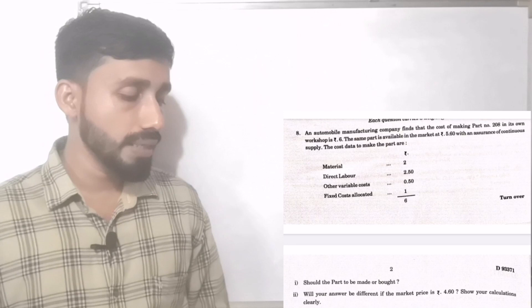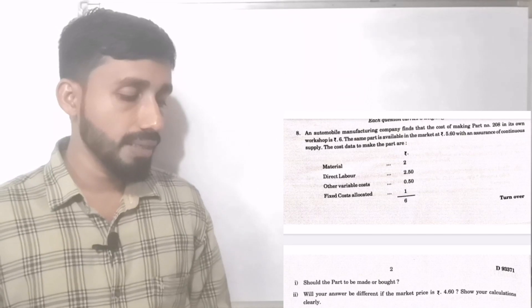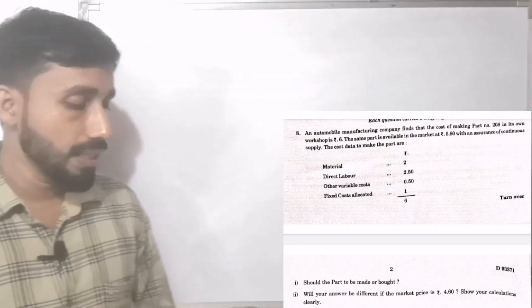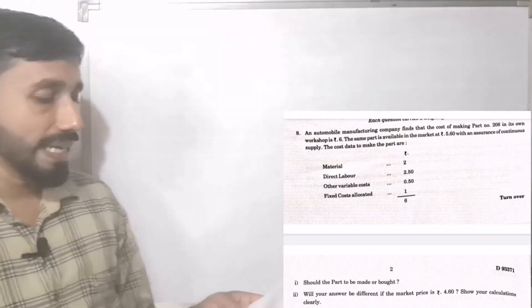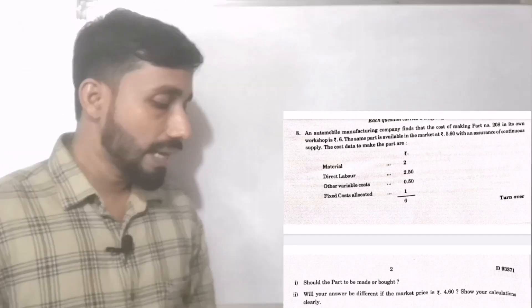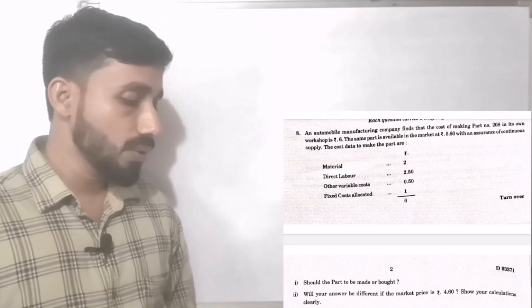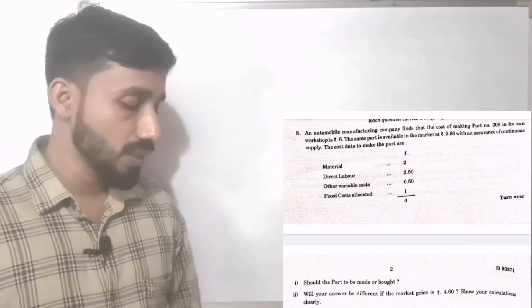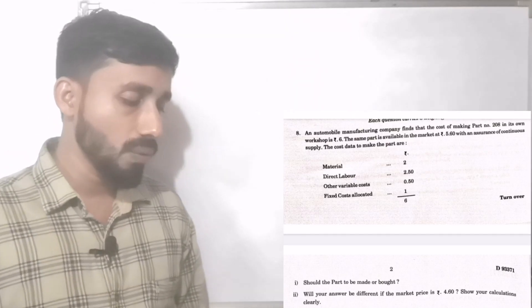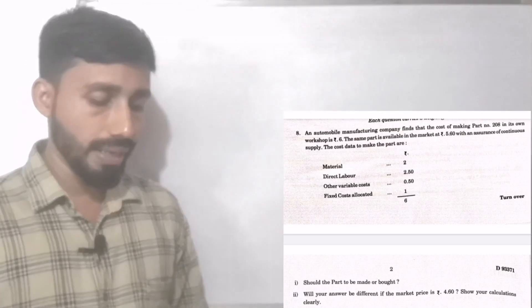The cost data to make the part are: Material Rs. 2, Direct Labour Rs. 2.50, Other Variable Cost Rs. 0.50, Fixed Cost Allocated Rs. 1 — total Rs. 6.